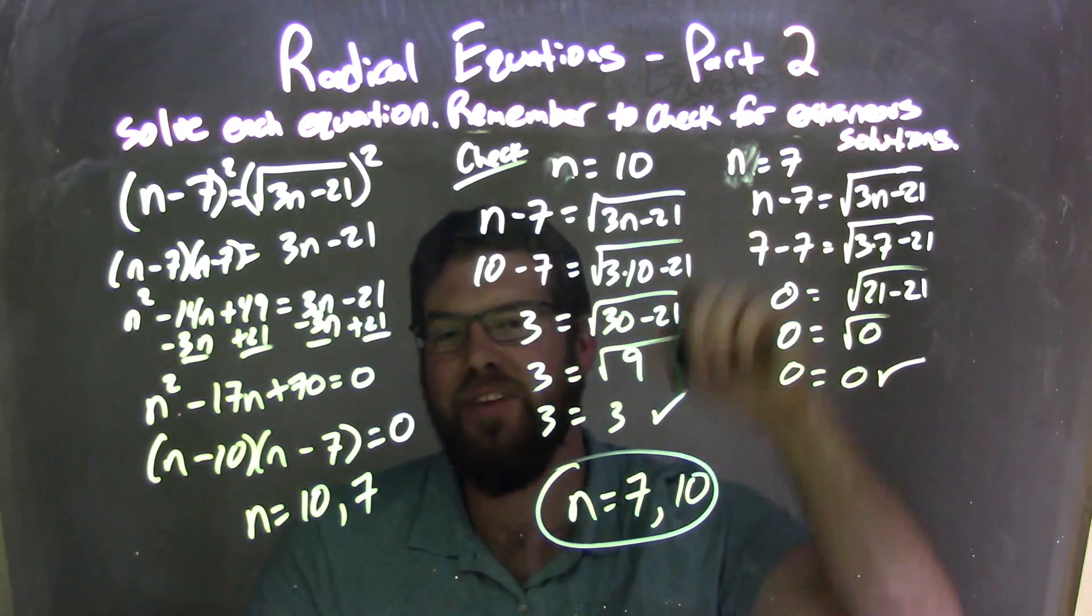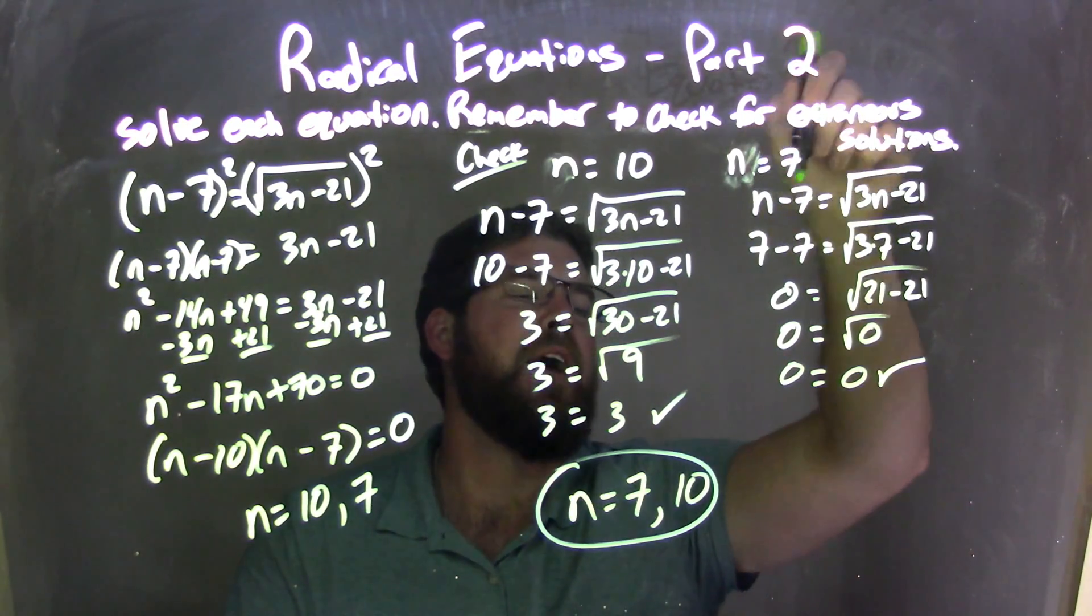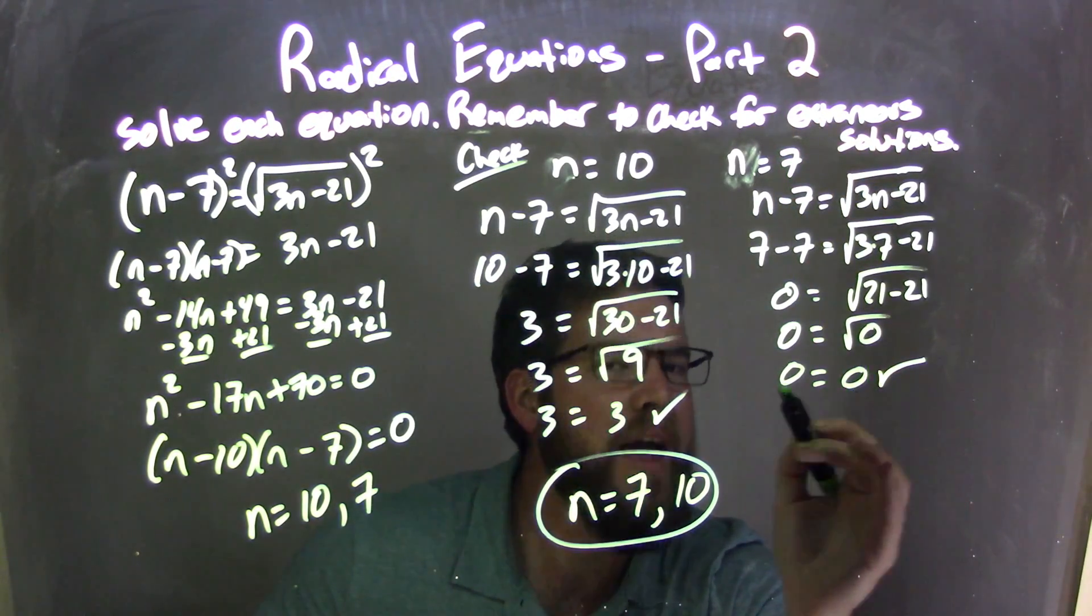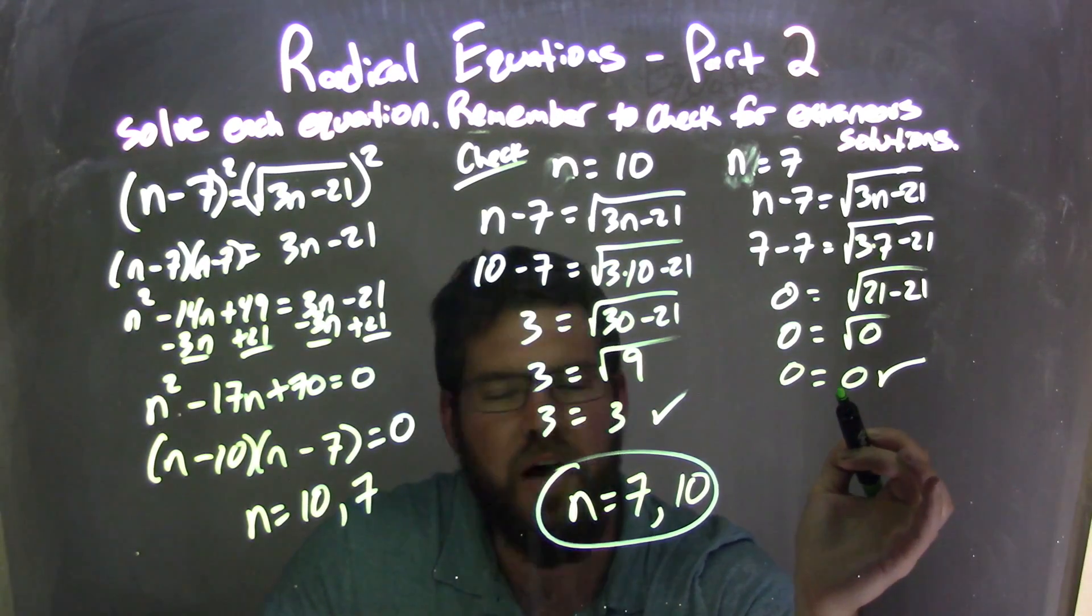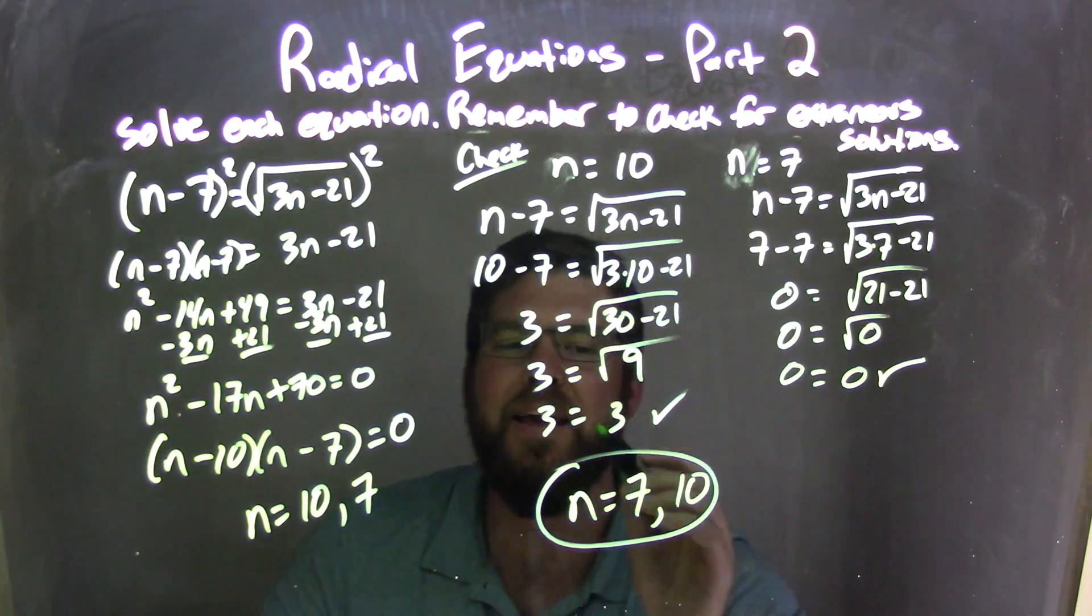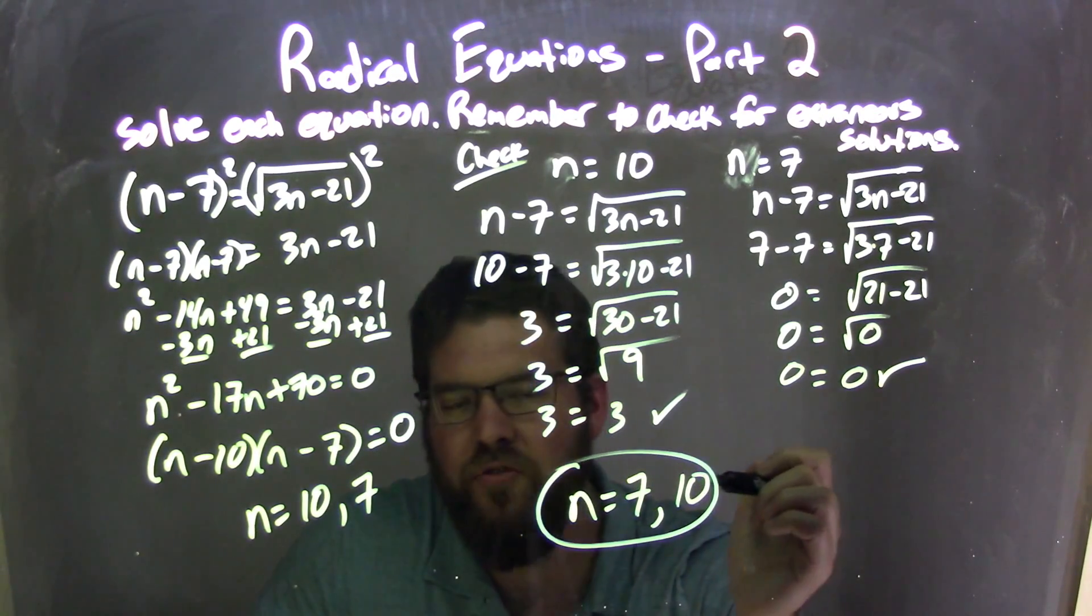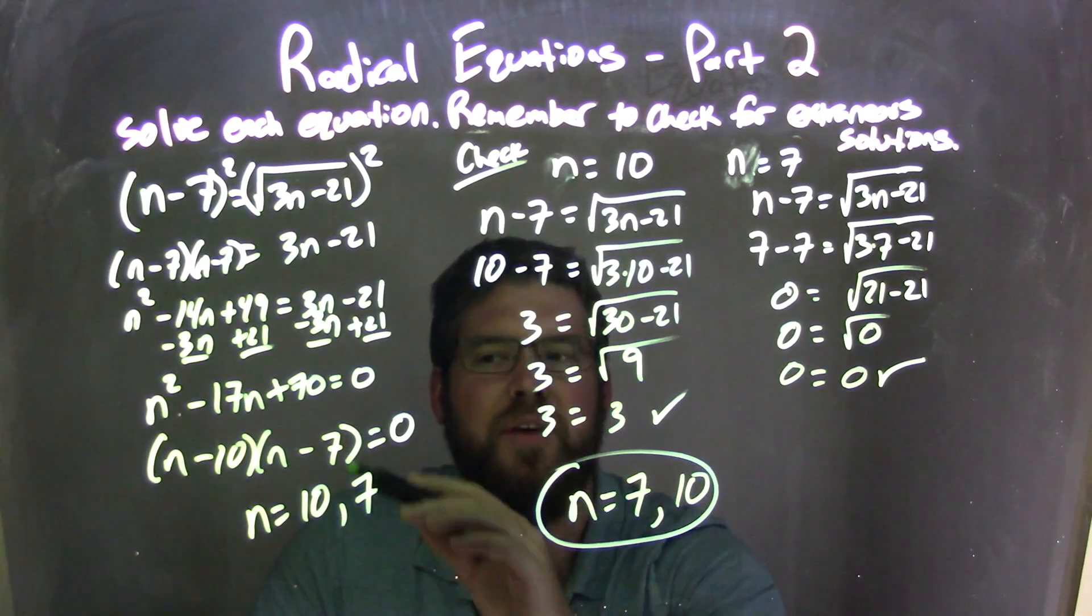Did the same thing with n equals 7, not x. 7 goes in for n. Simplified, simplified, simplified. Got 0 equals 0. Well, they are still equal, right? 0 does equal 0. That's a true statement making 7 a real solution as well. So when I wrote it out here, none were extraneous. I had both my solutions I did here when I solved.